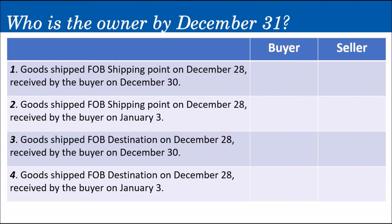Let's apply this in an exercise: Who is the owner of the goods by December 31? We ask this because we are reporting inventories in the statement of financial position, and we need to know whether to include certain items or not — whether it's already ours or not, whether it should already be on the balance sheet. It depends on the shipping terms to determine in whose accounting records the merchandise appears — still with the seller, or already with the buyer.